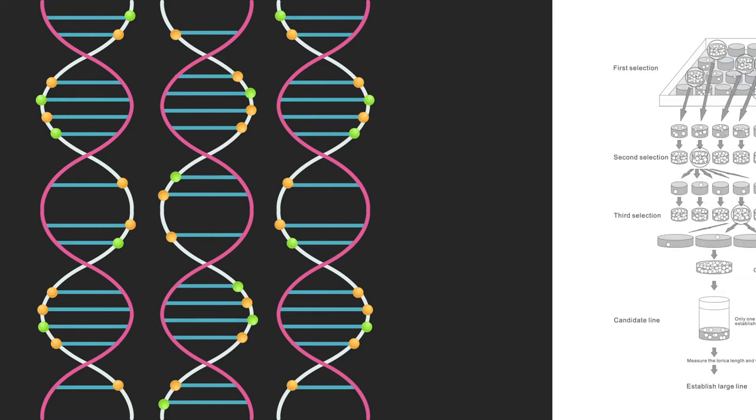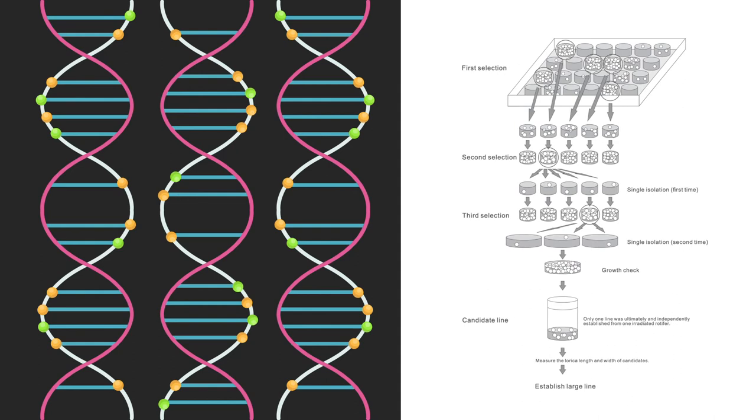The hard part was determining which rotifers gained beneficial genetic mutations, namely, mutations that led to rotifers that were not only larger than normal, but also that reproduced faster than normal.